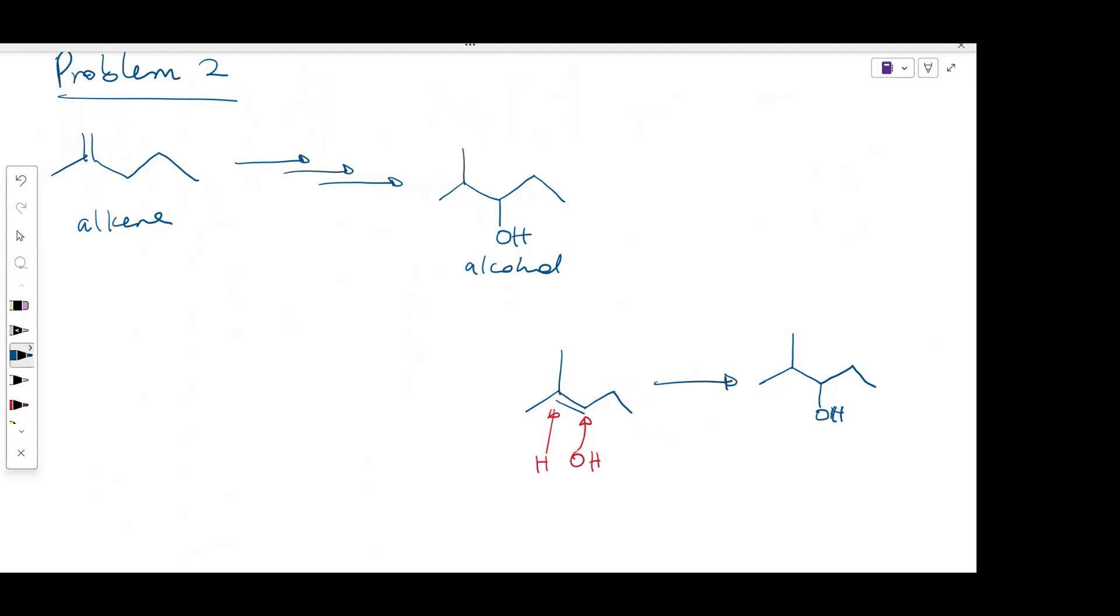From this point on, in order for OH to be added to the less-substituted carbon, we have to use a reagent that will do anti-Markovnikov addition of hydrogen and OH. And that reagent will be borane, sodium hydroxide, and hydrogen peroxide.